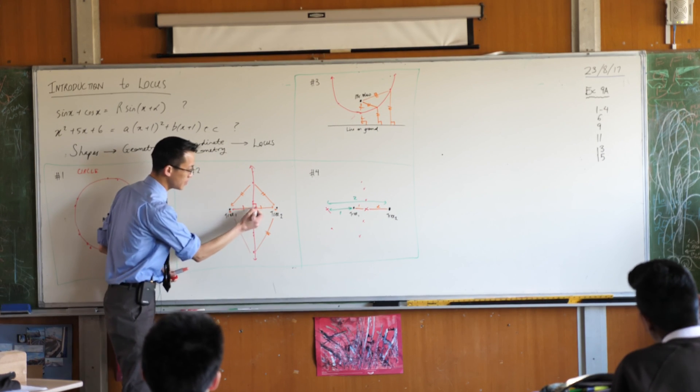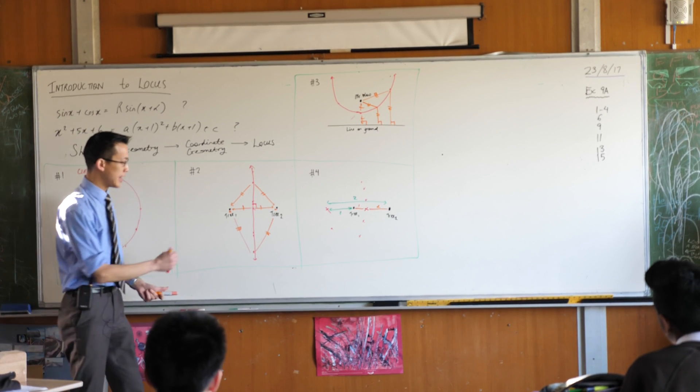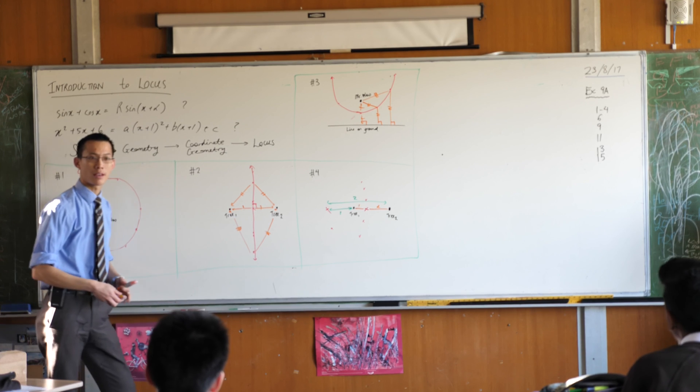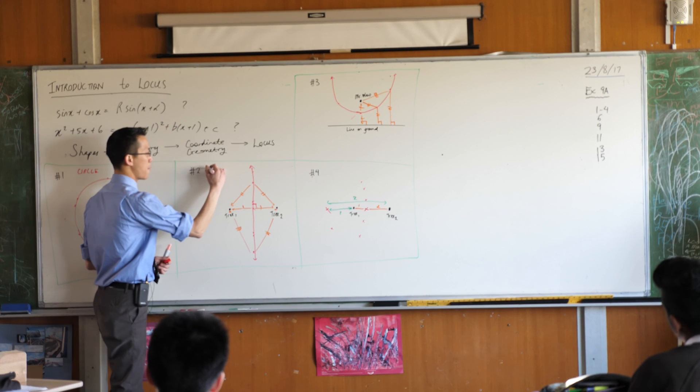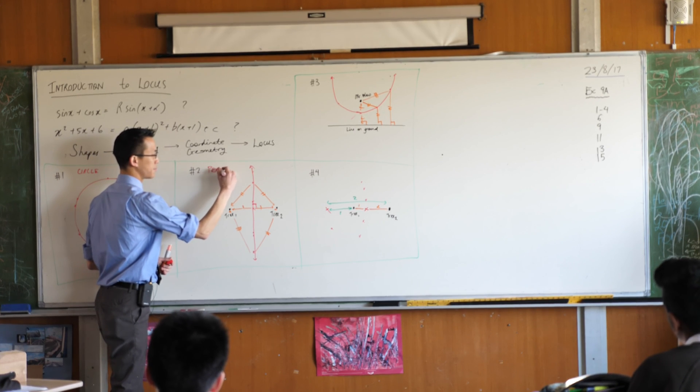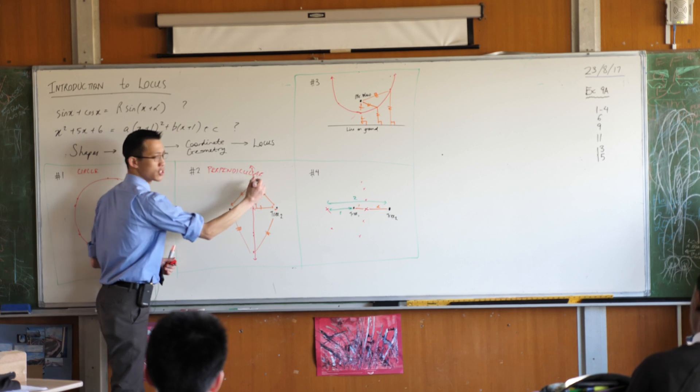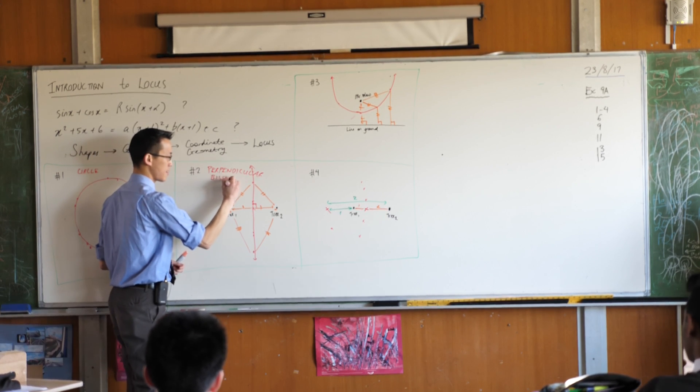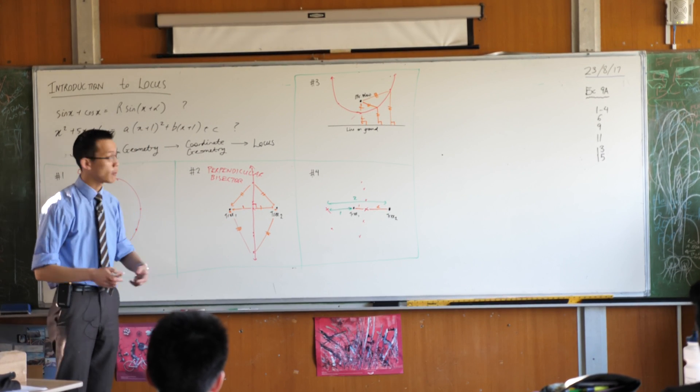This line here is perpendicular, has to be perpendicular. In addition to that, it bisects that interval between the trees. So this line here is not just a straight line, it is the perpendicular bisector of the interval between the two trees.